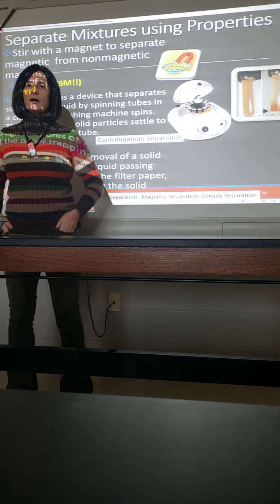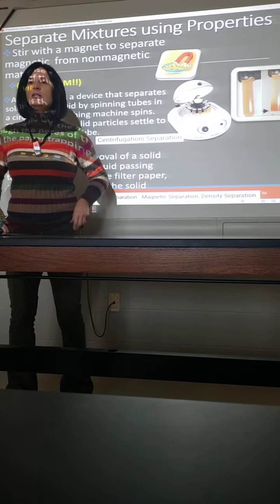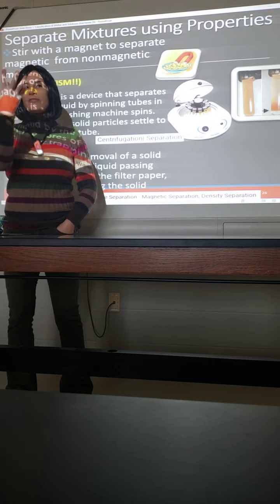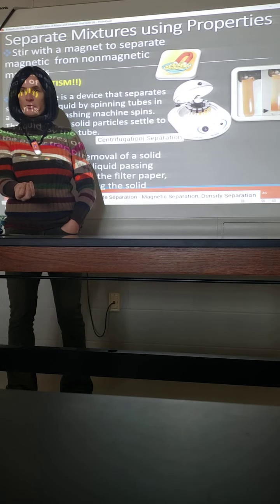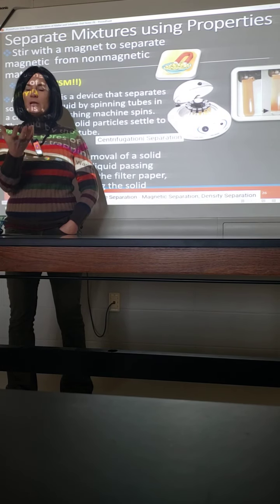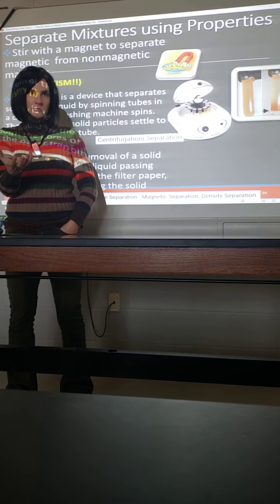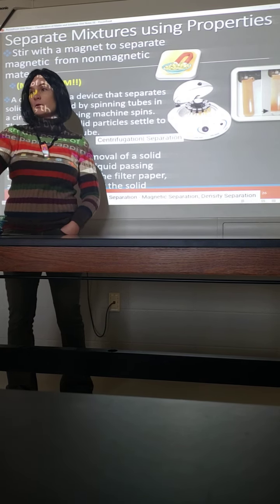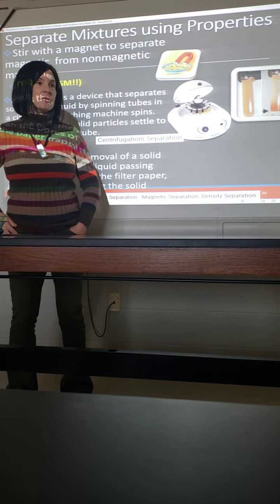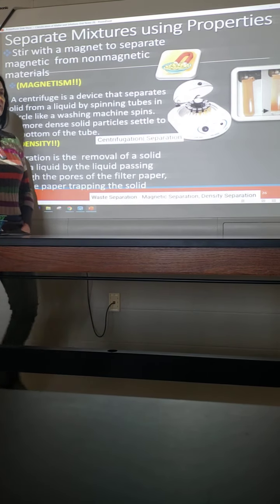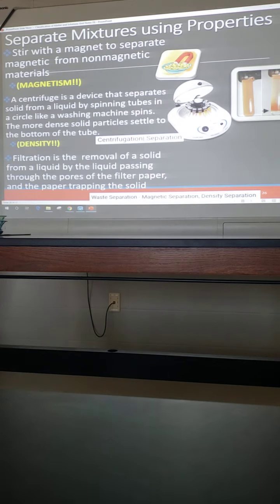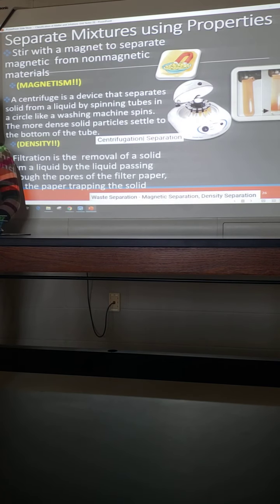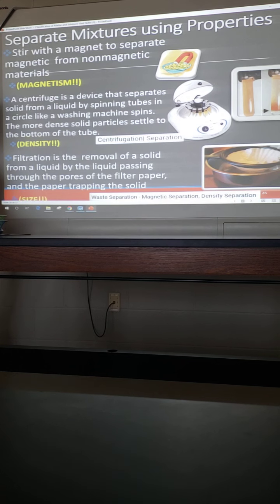So when you go and pour the pan into the strainer, you let the water filter through, leaving your noodles in that strainer or colander. And then you can do whatever you're going to do with the noodles, the spaghetti sauce with them or the cheese powder or sauce or whatever you're making. So every time you've made macaroni and cheese, you're actually using a filtration system. And the property that you're actually using is size.